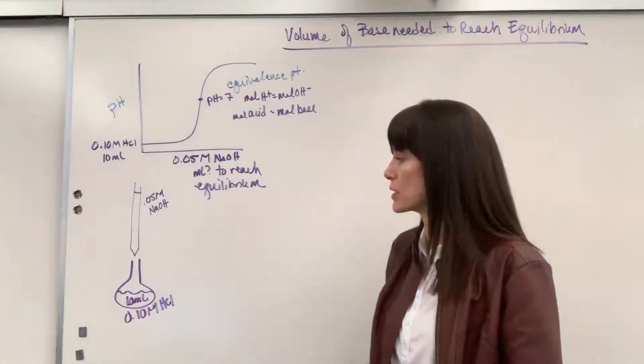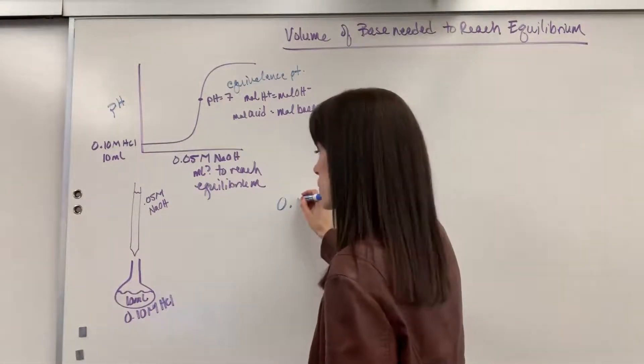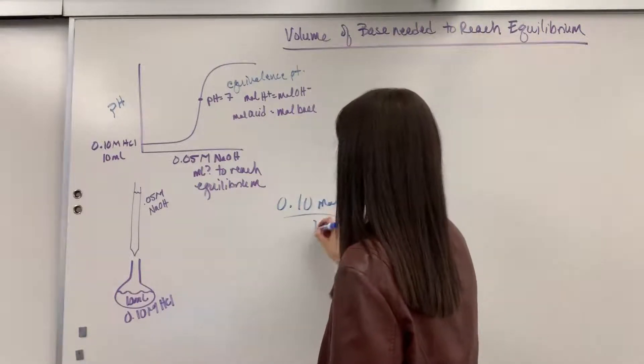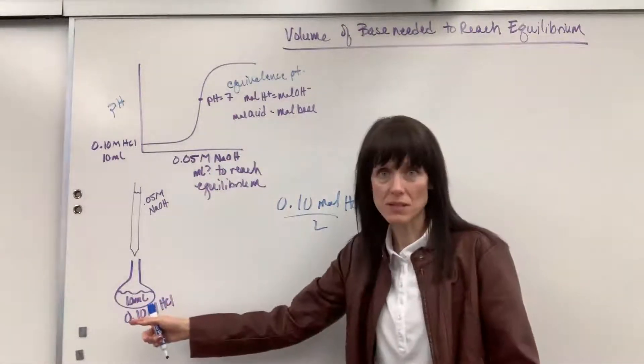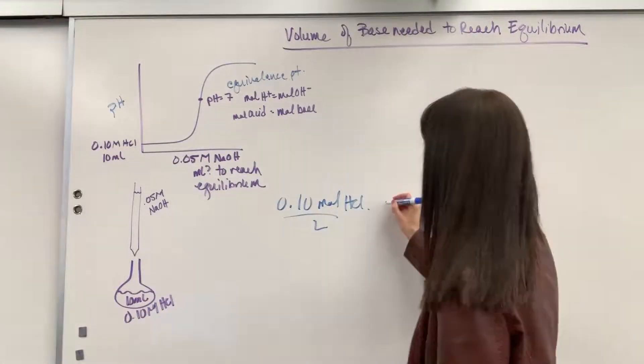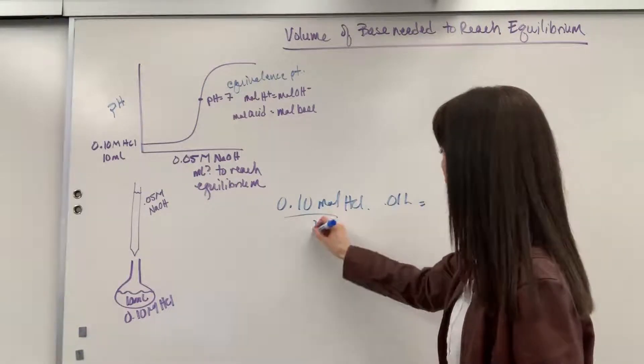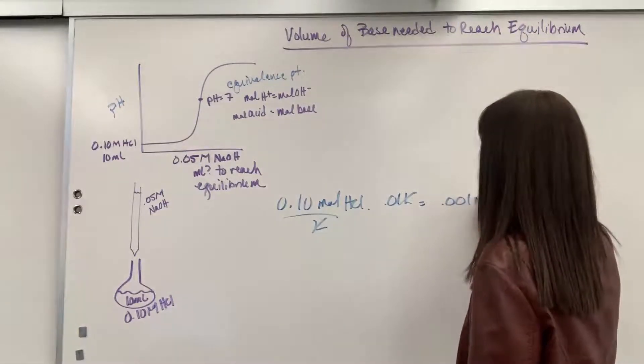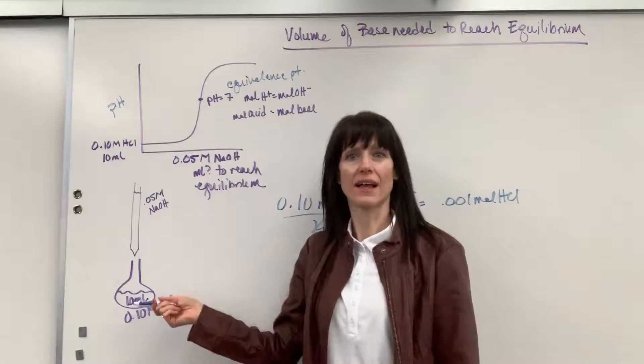Actually, I have two pieces of information. Let's do that. If we have 0.10 mole per liter of HCl, and we have got 10 mils, I'm just going to divide 10 by 1,000. That's 0.01 liters. That will give us liters canceling and 0.001 moles of HCl.